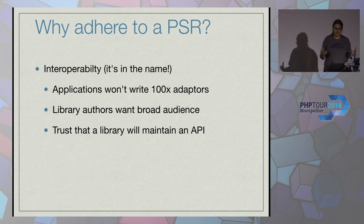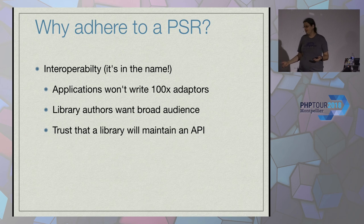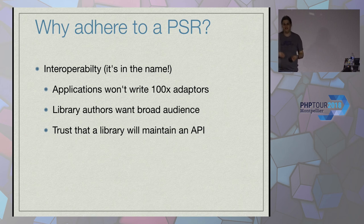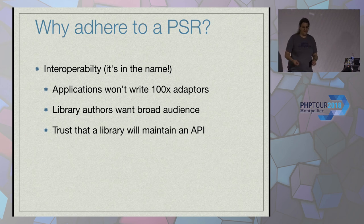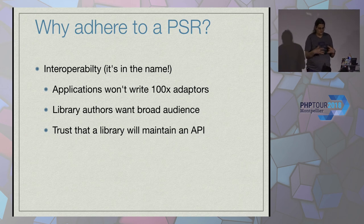From an application developer point of view, you want something that requires the least amount of work to use different libraries. From a library author point of view, you want the same thing — you want the most people possible to be able to use your library so they're finding edge cases, sending bug reports, making your library better, and contributing back. So it's a very co-beneficial sort of arrangement.